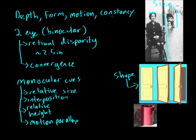One other type of constancy is color constancy. For example, with a red cup, despite changes in lighting, even though one part of the cup appears brighter and another part looks darker, the actual color falling on our retina is different in each area. Yet we know the cup is actually the same color throughout. That is color constancy.